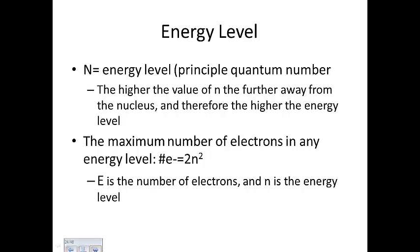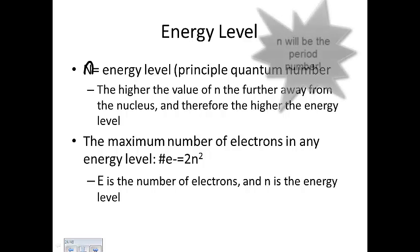Let's start at the beginning. N — normally lowercase n — is the energy level. It's the principal quantum number. The higher the value of N, the further away from the nucleus the electron is, and therefore the higher the energy level.